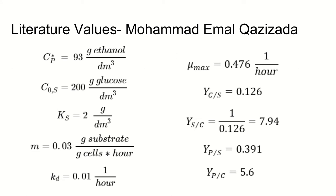For the overall design and scaling of the system, MATLAB was used. These literature values were found from Mohamed Kazizadeh and utilized in the program. Here, CP star is the final product concentration. C0 is the initial concentration of the substrate. Ks is the monod constant. M is the cell maintenance. Kd is the cell death rate constant.